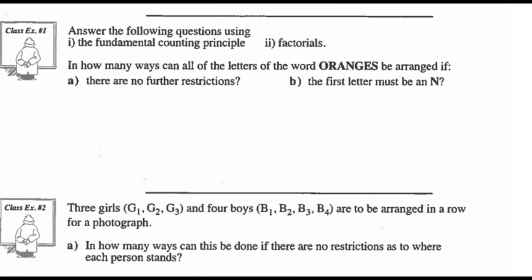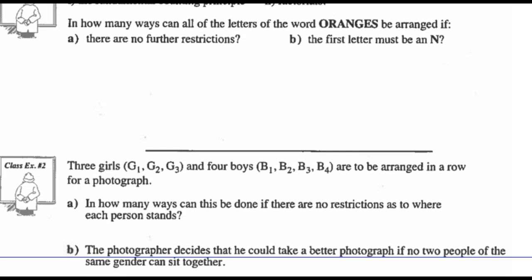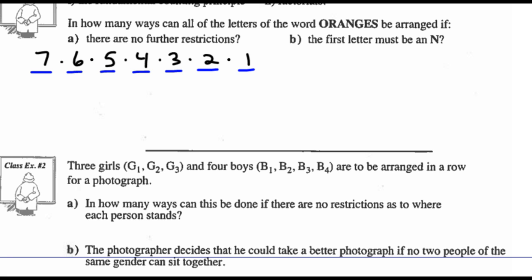Example 1: answer the following first with the fundamental counting principle and second using factorials. In how many ways can all the letters of the word 'oranges' be arranged if there are no further restrictions? There are 7 letters. Any of the 7 letters can come in the first spot, then 6, 5, 4, 3, 2, 1 — we multiply these together. That's the fundamental counting principle. In permutation notation, 7 × 6 × 5 × 4 × 3 × 2 × 1 equals 7 factorial, which is 5,040 different arrangements.